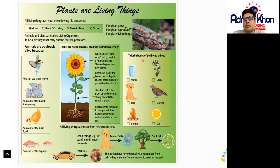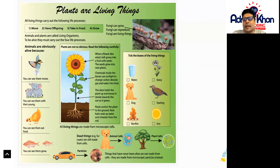This is a particular example — it says tick the boxes of the living things. Water is not a living thing because it doesn't have those four processes. A dog — yes it does, because a dog can move, can have offspring, it can take in food, and it can also grow. A bonfire — it's not a living thing. A daisy plant — yes it is. A starling, a bird — yes it is. The sun — no it can't.